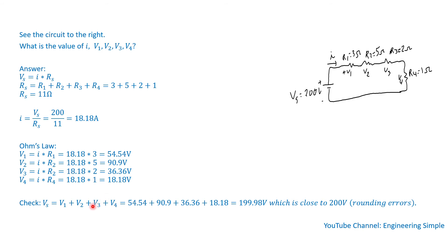As a quick check, we know the applied voltage is 200 volts. So if we sum up V1, V2, V3, and V4, we should get something very close to 200. There will be some rounding errors, but if we sum all these values we get 199.98 volts, which is very close to 200. So our calculation is correct.